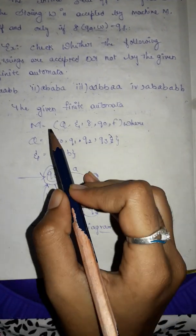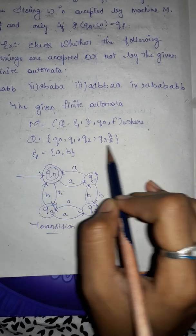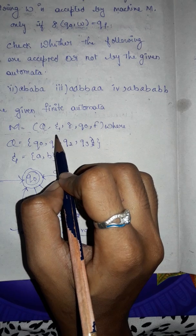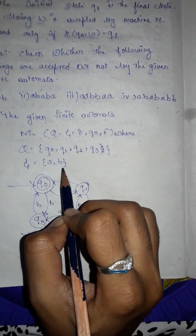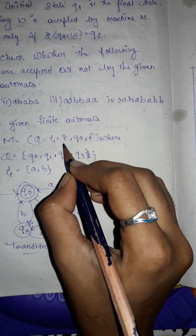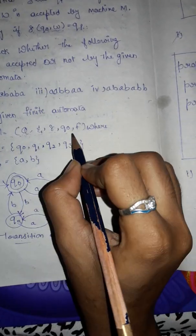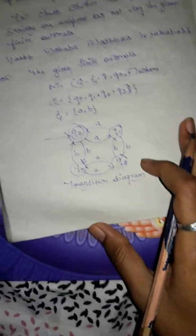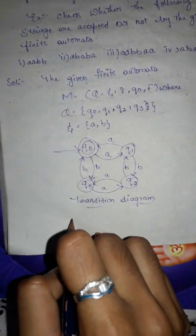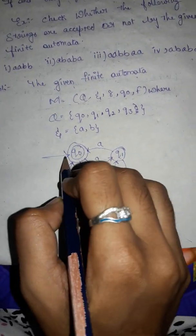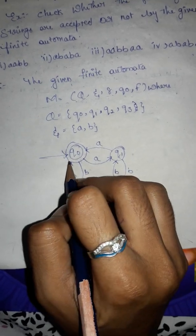Q is the set of states — we have four states: q0, q1, q2, q3. The input alphabet contains a and b. The transition function is given, q0 is the initial state, and F is the set of final states. This is the transition diagram, and we have four states: q0, q1, q2, q3.